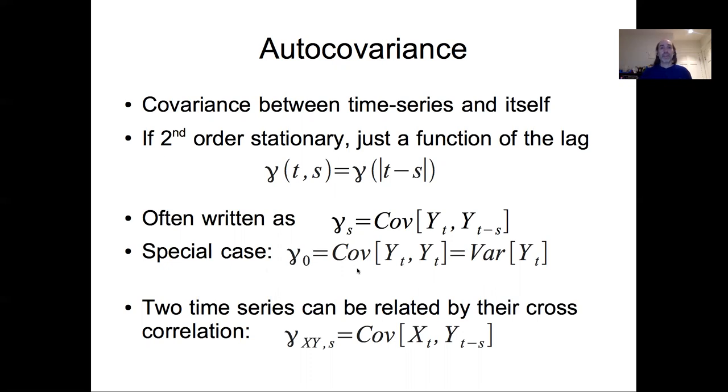In addition to thinking about the temporal autocovariance and autocorrelation within a single time series, you can also calculate the cross correlation between two time series. So you could have the relationship between some x at one time and some y at some lag s.